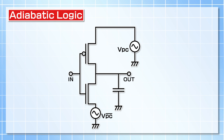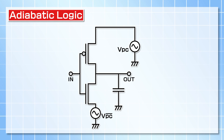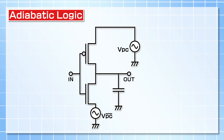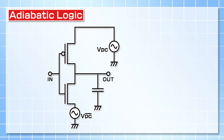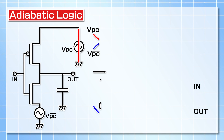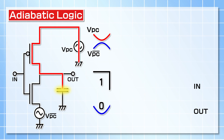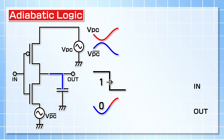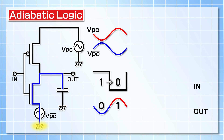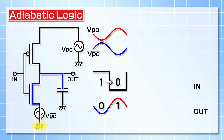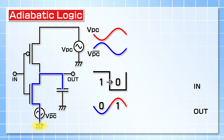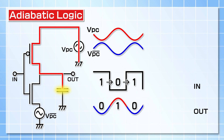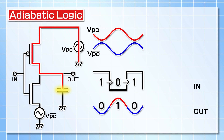In an adiabatic logic circuit using AC supply voltages, the sudden current flow and the energy losses can be controlled. When the input voltage changes from 1 to 0, the upper side transistor is in the ON state. In this situation, the supply voltage is a slowly varying sinusoidal voltage. Hence, rush current can be reduced, and the output signal goes to a high state.